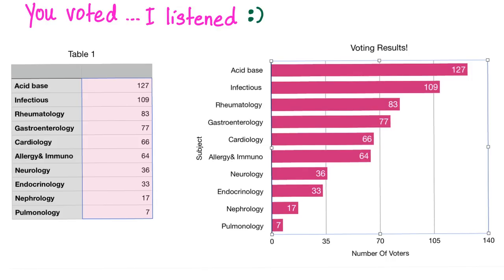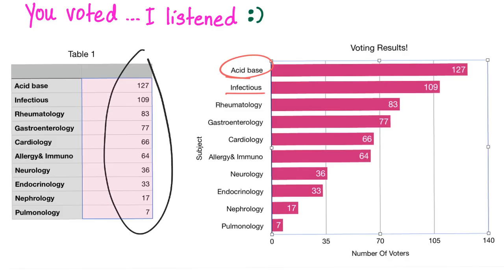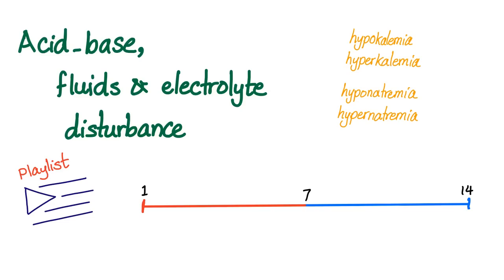A few weeks ago we voted on the subject you guys wanted to see next, and the winner was acid-base. Second place was infectious diseases. A channel with tens of thousands of subscribers, but only a few people voted. Houston, we have a problem.